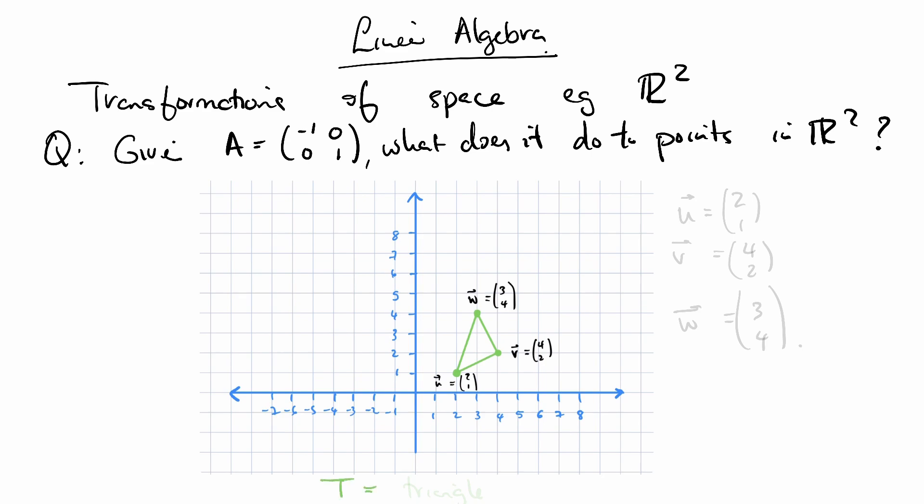So T is our green triangle. And it's defined by three points. U is 2, 1. V is 4, 2. And W is 3, 4. We're going to see what A does to the triangle.